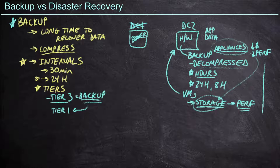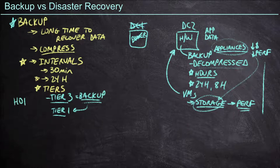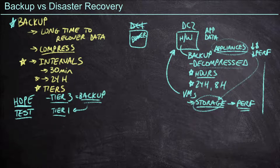Although for smaller organizations, we might just not have a choice — it might be the only solution we can afford, and we're just going to have to hope that in the event of a failure, we can get our tier one applications back online in hours and not in days. But I just used a key word there: hope. We never want to have to hope anything. What we want to do is test these things — there should be absolutely no question in our mind how long it's going to take to get back online.